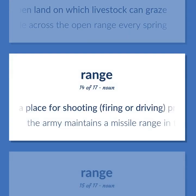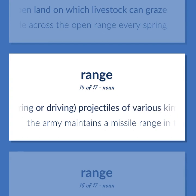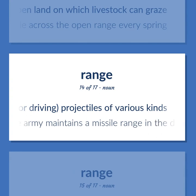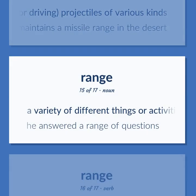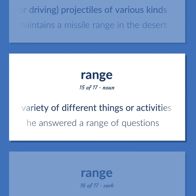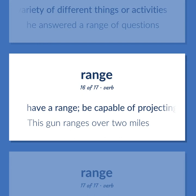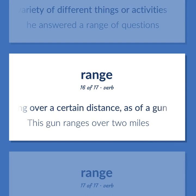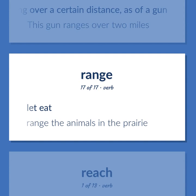Range: A place for shooting, firing, or driving projectiles of various kinds — the army maintains a missile range in the desert. A variety of different things or activities — he answered a range of questions. To have a range, or be capable of projecting over a certain distance as of a gun — this gun ranges over two miles. To let eat — range the animals in the prairie.